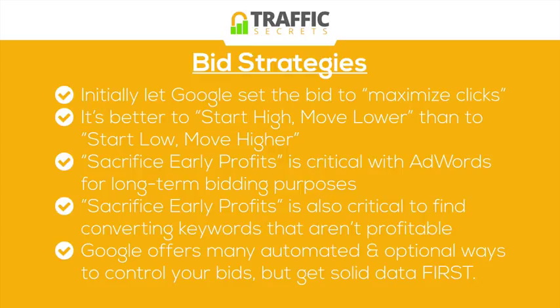Google offers many automated and optional ways to control your bids, but you've got to get solid data first before you can make those decisions and use those different controls. They have automated controls where you can set things like: if your conversion rate is within 10% or 20% of X, then bump my bid up to 30% more if needed to stay number one or two when competitors change their bids. There are all kinds of these finite controls, but you shouldn't use any of that until you get solid data first, after running campaigns for at least a few weeks.